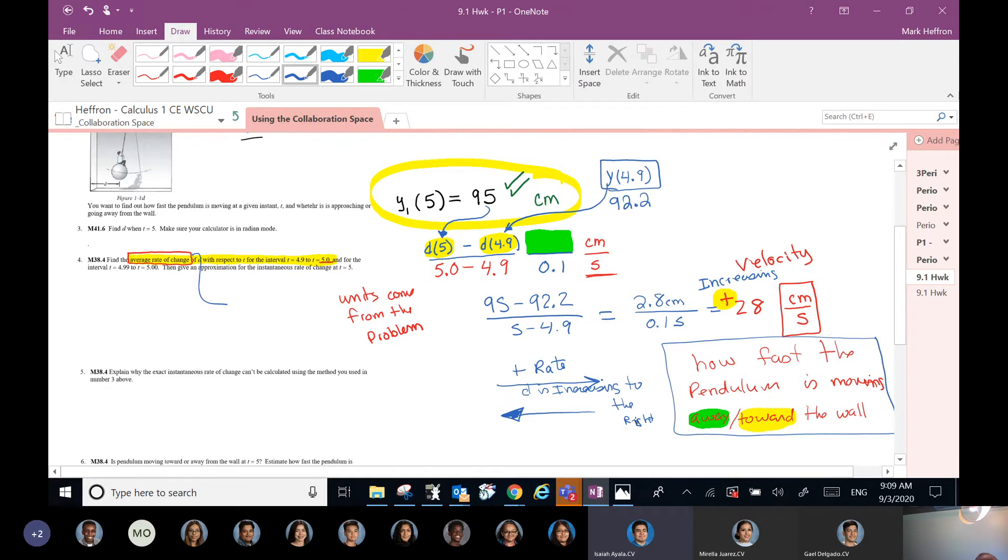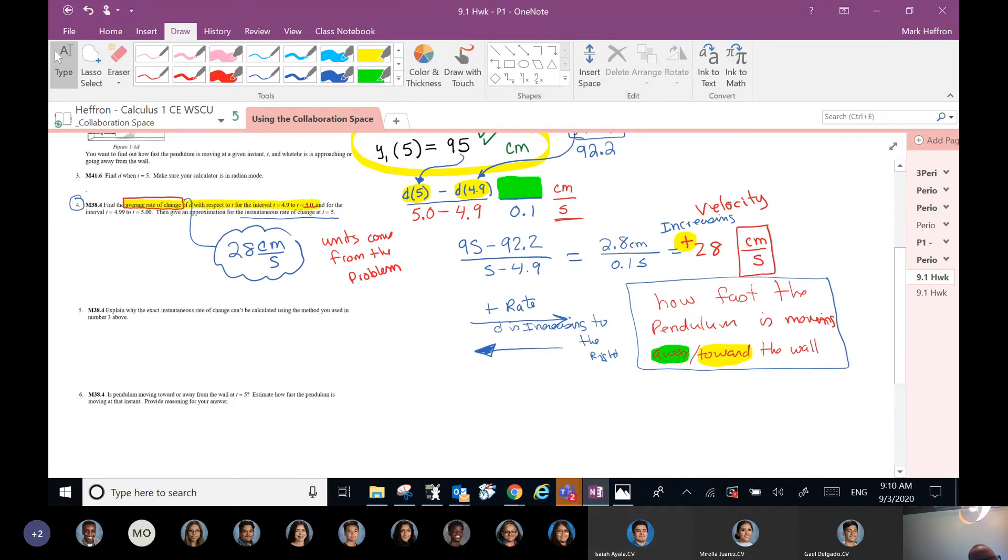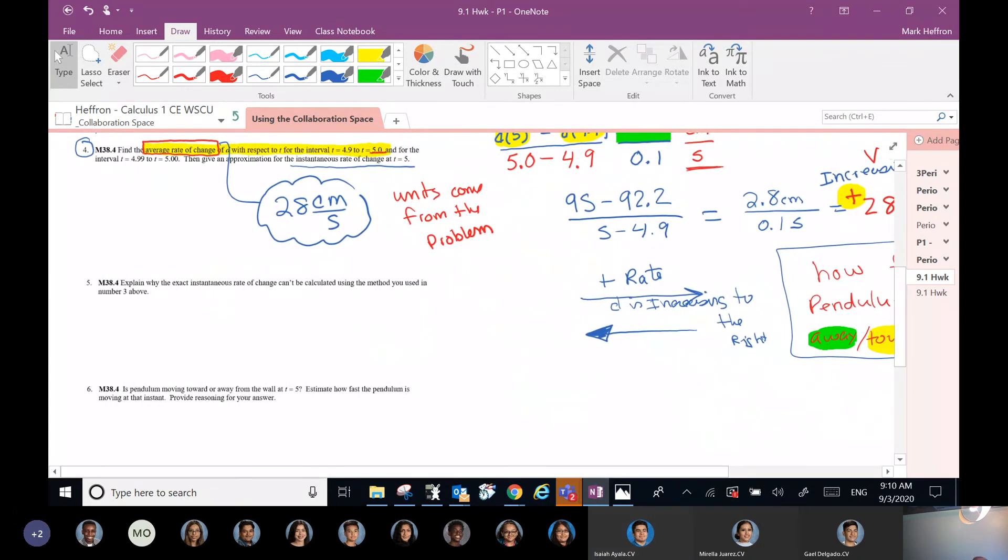And so, now, that's probably more information than we were asked for for number four. But I bet we can give an approximation of the instantaneous rate of change at T equals five. We would say 28 centimeters per second. And as always, I feel like we're just getting warmed up and it's pretty much time to go. But what I want you to do is just look at number five. We didn't finish number four. Do you all know how you would do the part I've highlighted in green? The same thing? Yeah, it's the same thing. What's the only difference, Isaiah? This fraction number. Yeah, same, but a different interval.